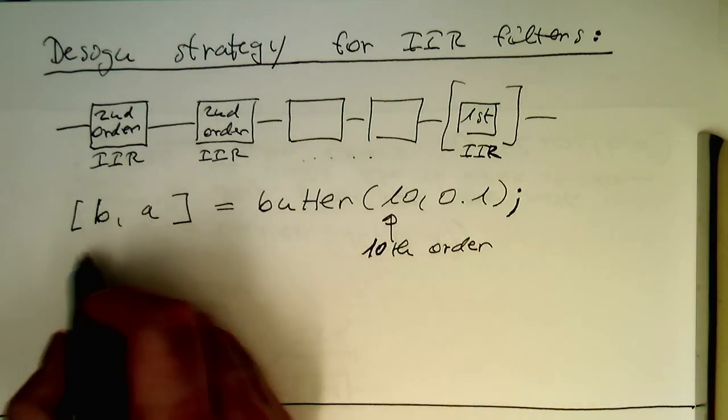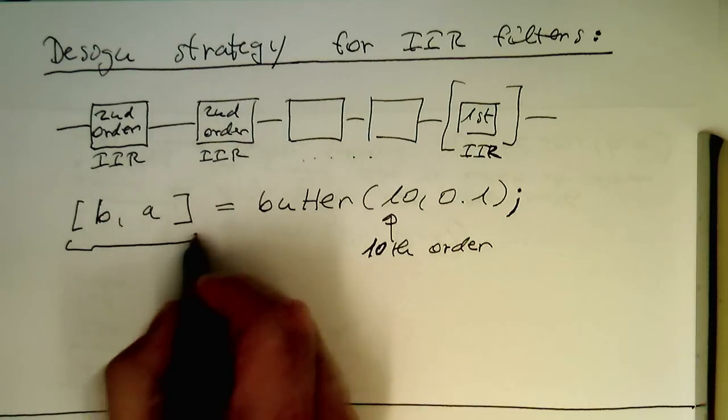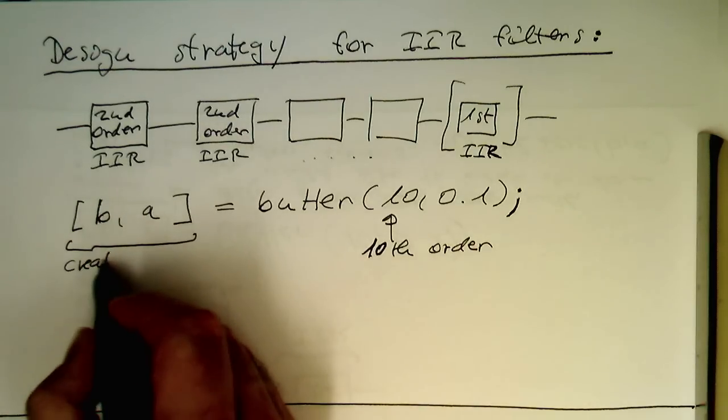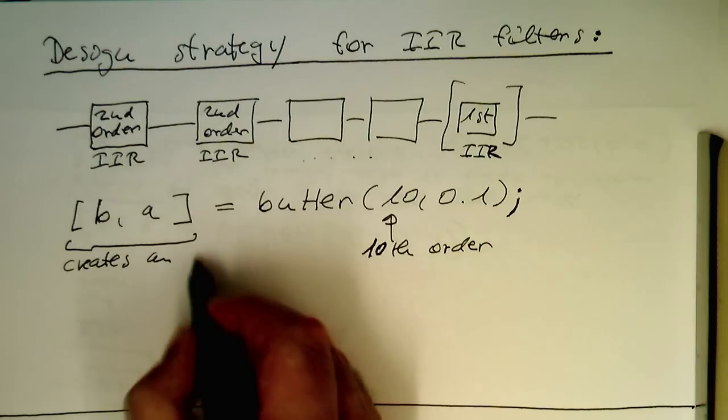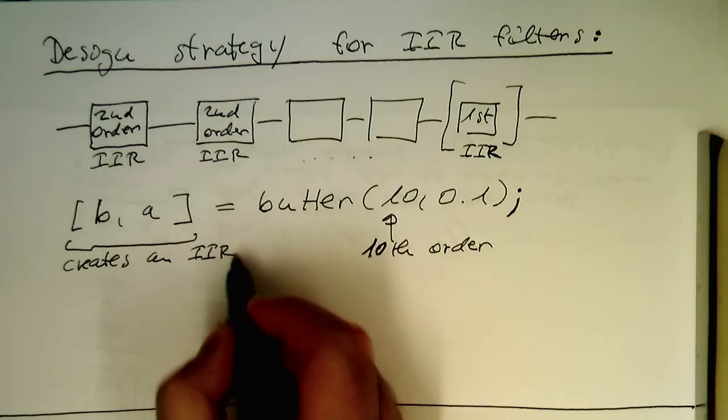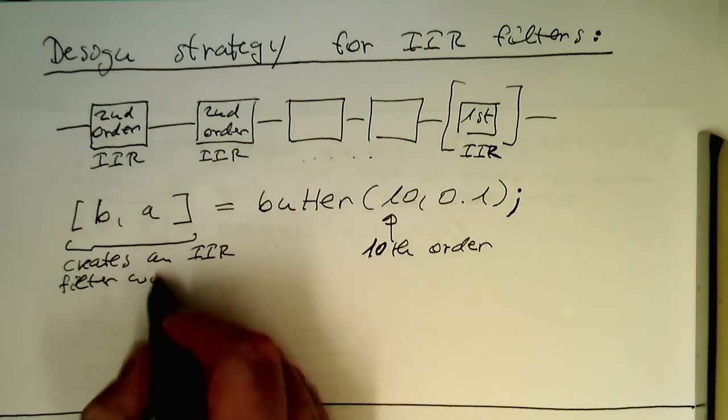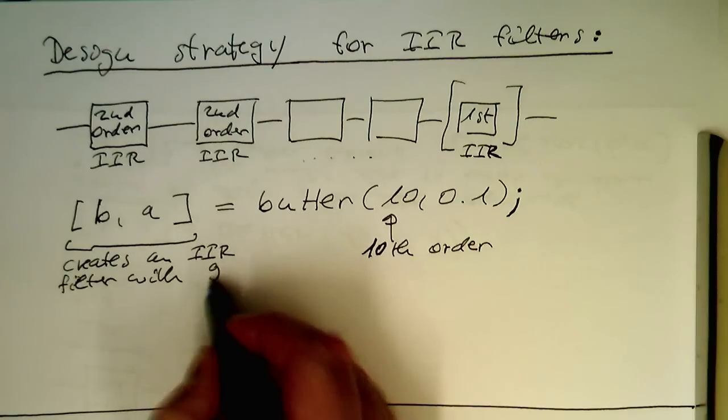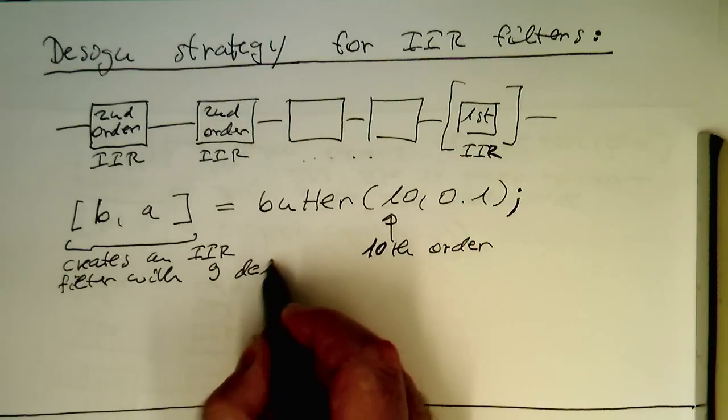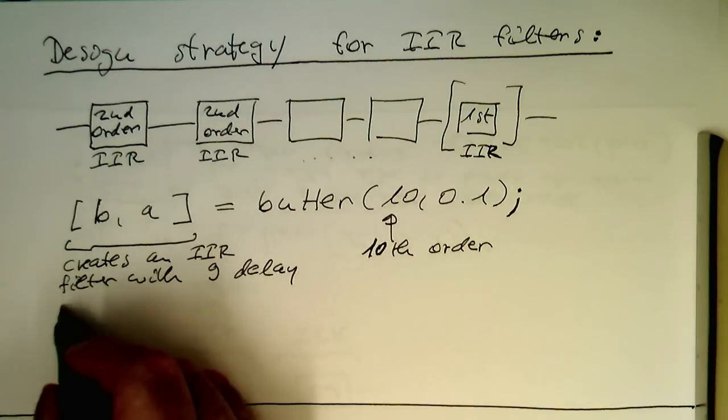Here this creates an IIR filter using Butter, with 9 delay steps.